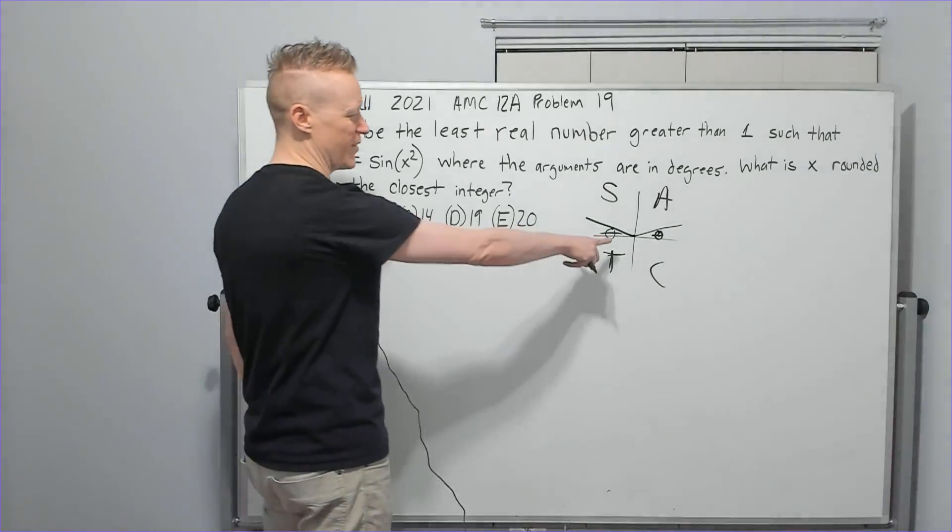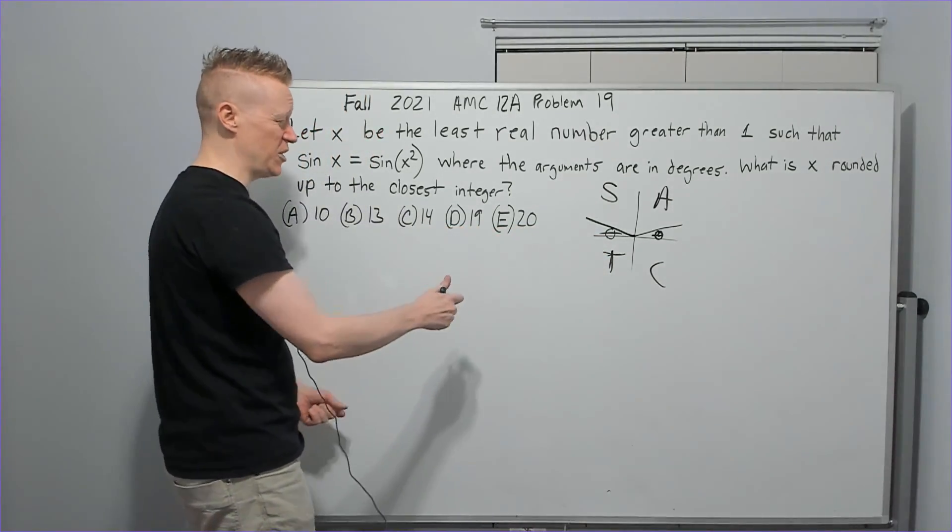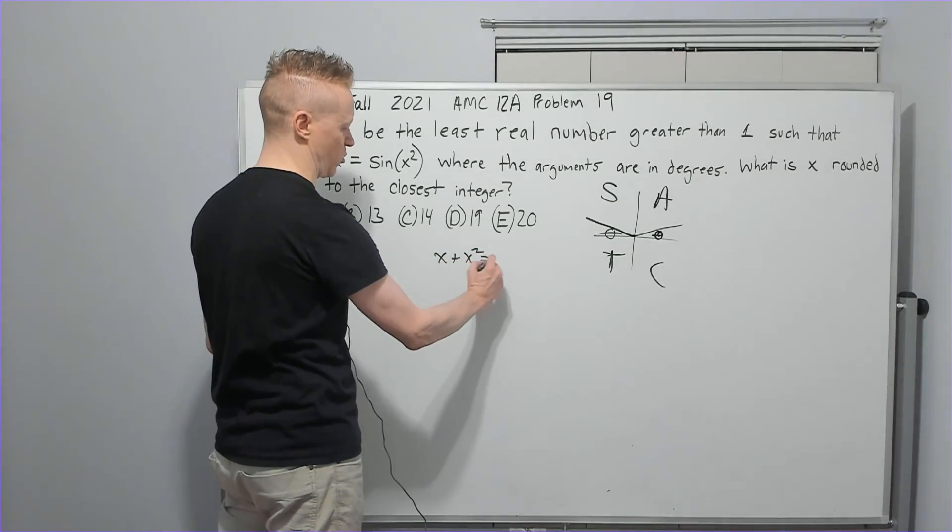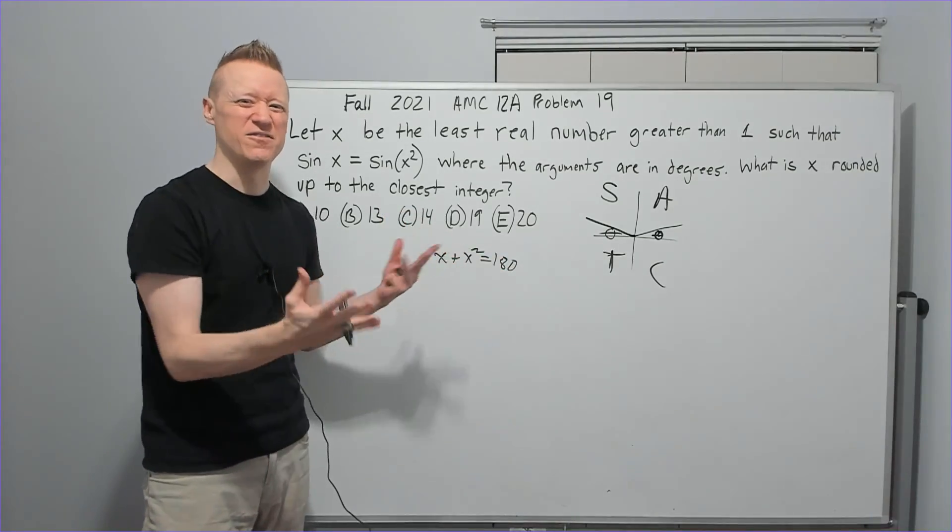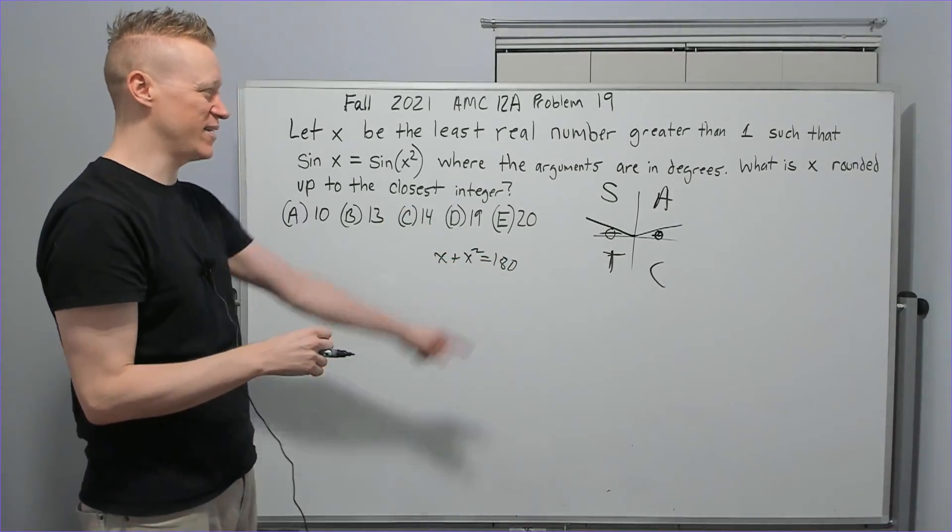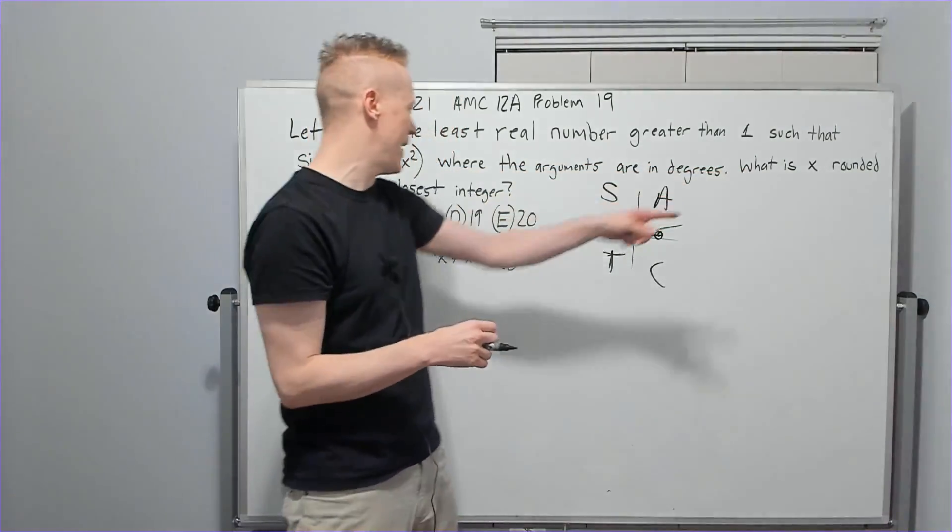So then when you think about that, you could, if you wanted to, you could say, all right, x plus x squared equals 180. And I thought about that and you try and move it over and factor, but why? We're not even going to get an exact value anyway. We want x rounded up. Let's just toss this 10 in there.